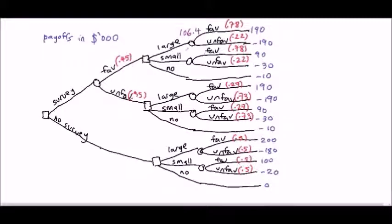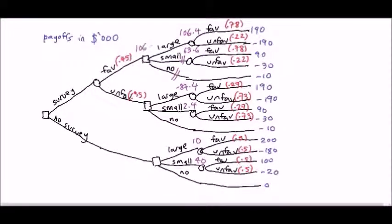Calculate the EMVs at each state of nature node. Start from the right side of the decision tree. Select the branch with the highest payoff. For example, between payoffs 106.4, 63.6, and negative 10, choose 106.4. Write this value on top of the decision node. For the branches we don't choose, cut the branch.